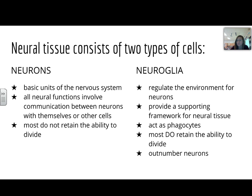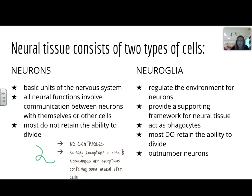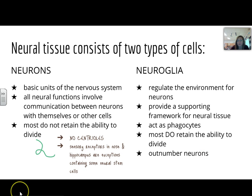Most neuroglia do retain the ability to divide, and they outnumber the neurons by quite a bit. The reason why neurons don't divide is because they don't have centrioles, which play a key role in cell division by helping the spindle fibers move appropriately during division. There are some neurons, though, usually located in sensory receptors in the nose or in the hippocampus, that are exceptions and do contain some neural stem cells to allow for new cells to be made and divided there.